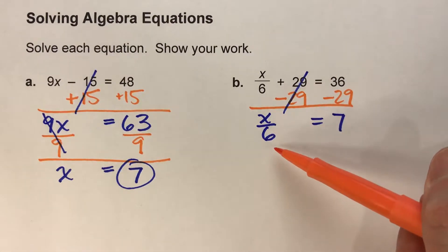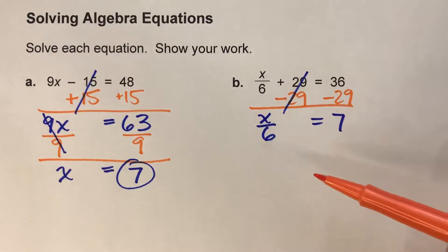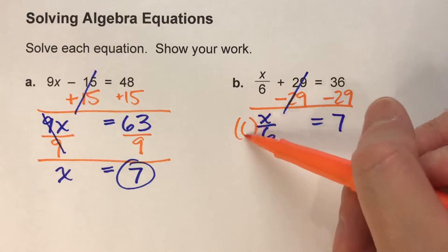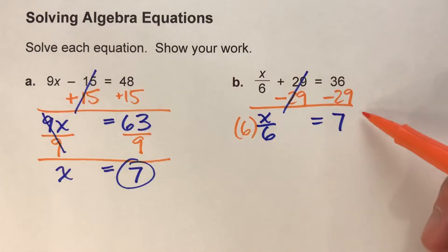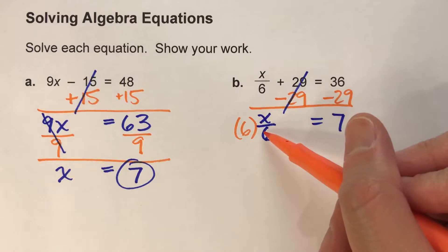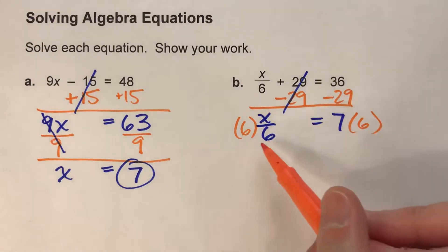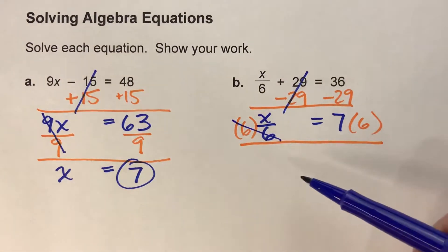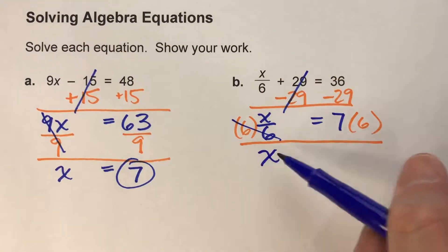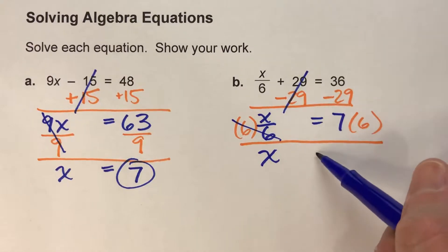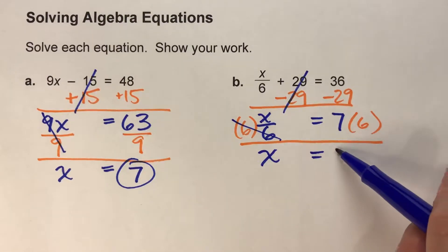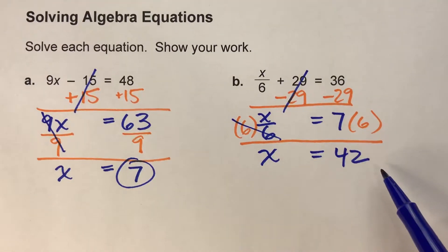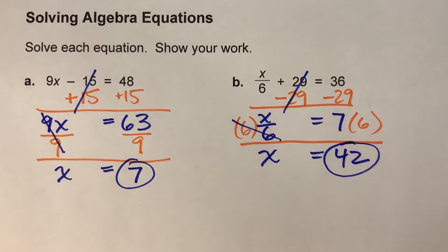Now we've got x divided by 6. To undo dividing by 6, we're going to multiply by 6. I like to use parentheses when I multiply — you can use the times symbol if you want. What I do to one side, I have to do to the other. Multiplying and dividing by 6 undo each other, and all that's left is x. On the other side, 7 times 6 is 42, giving us the statement that x equals 42.